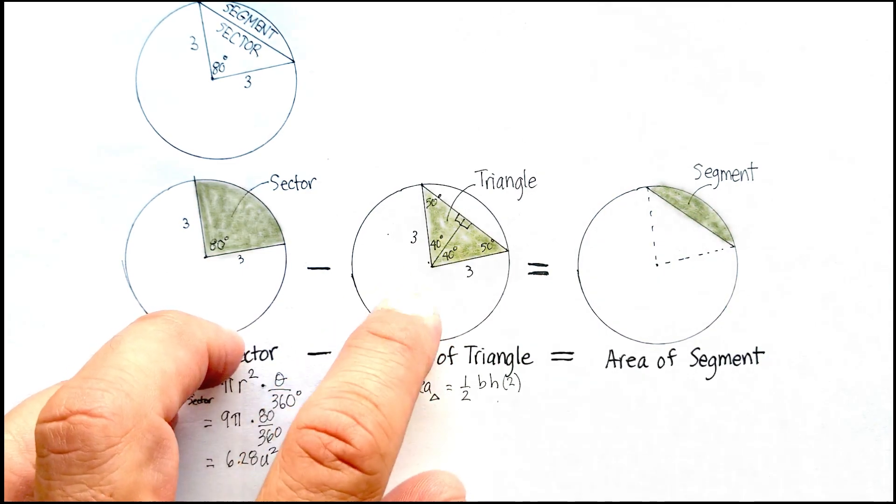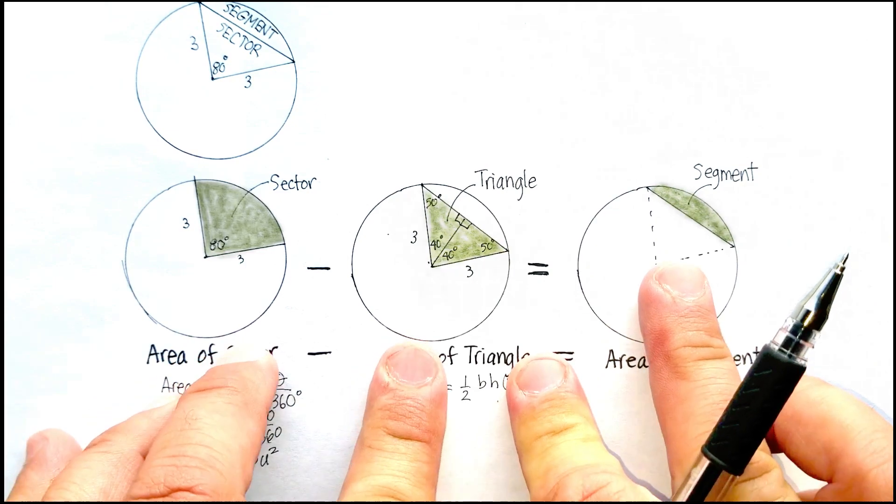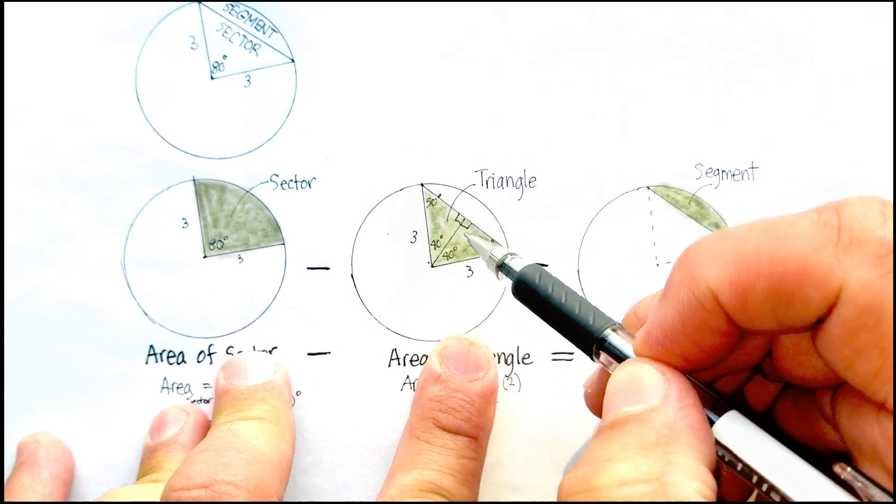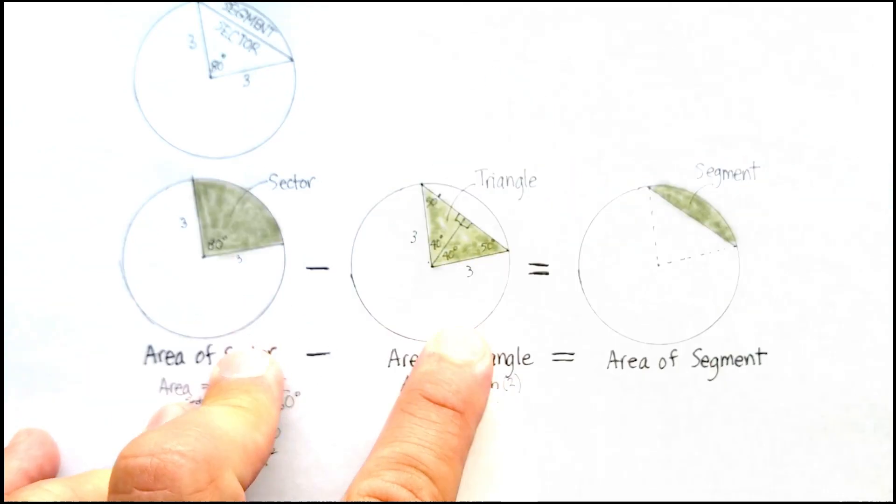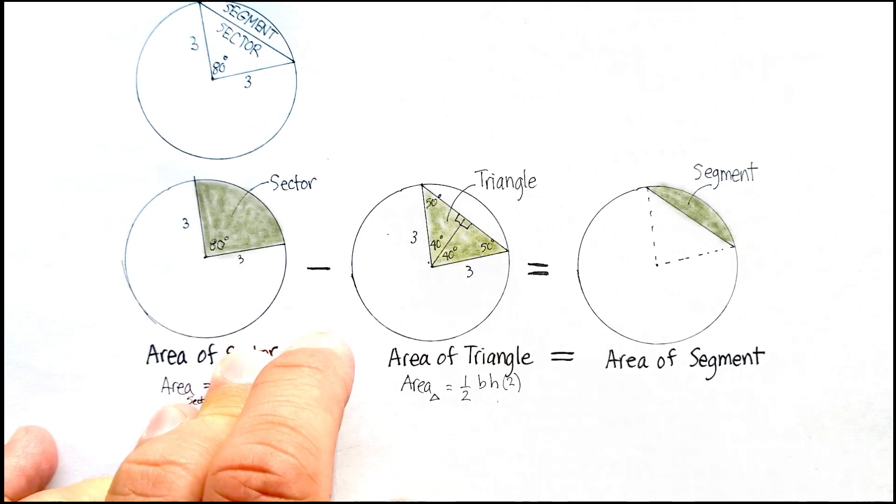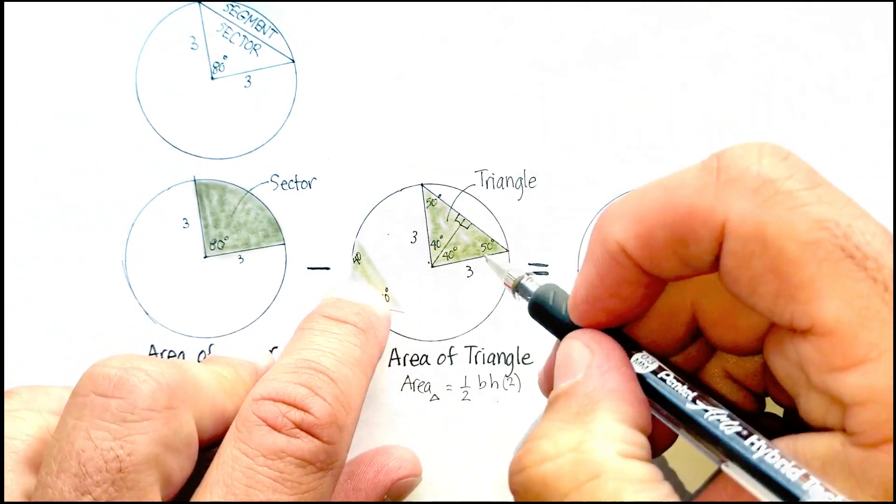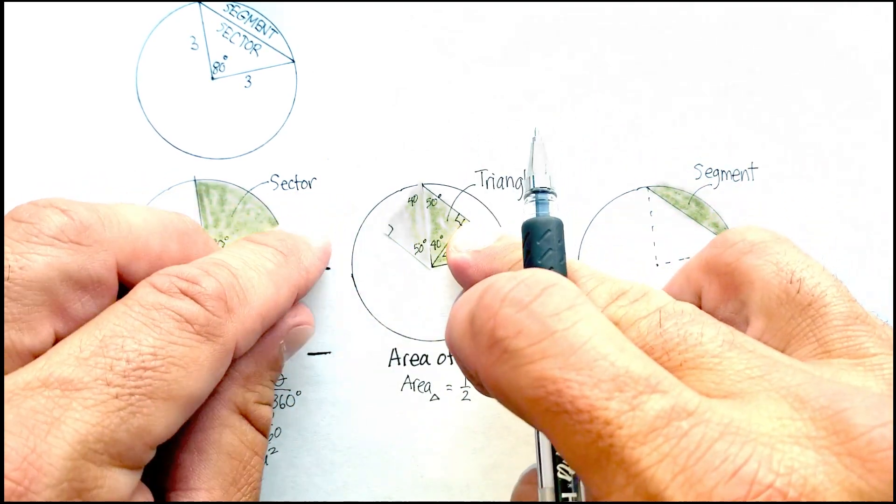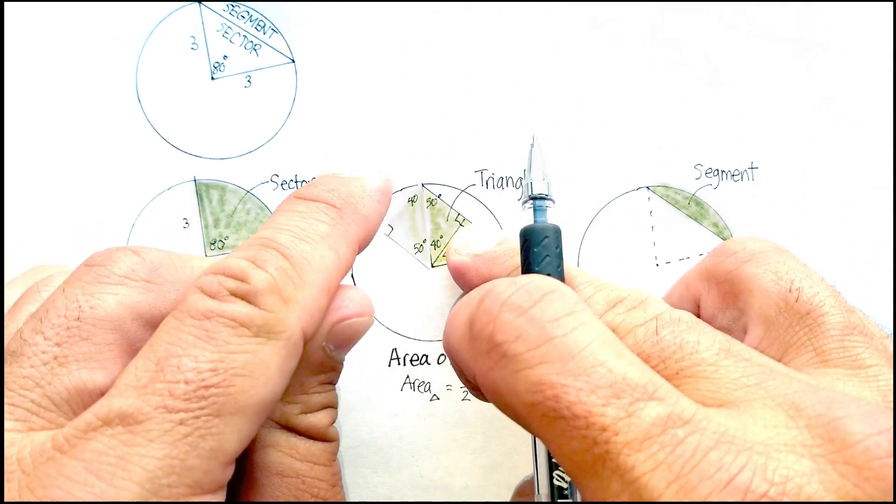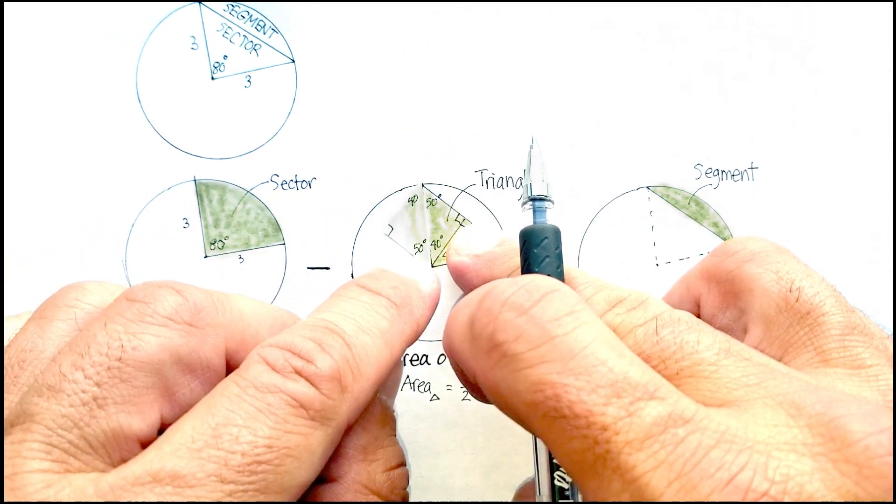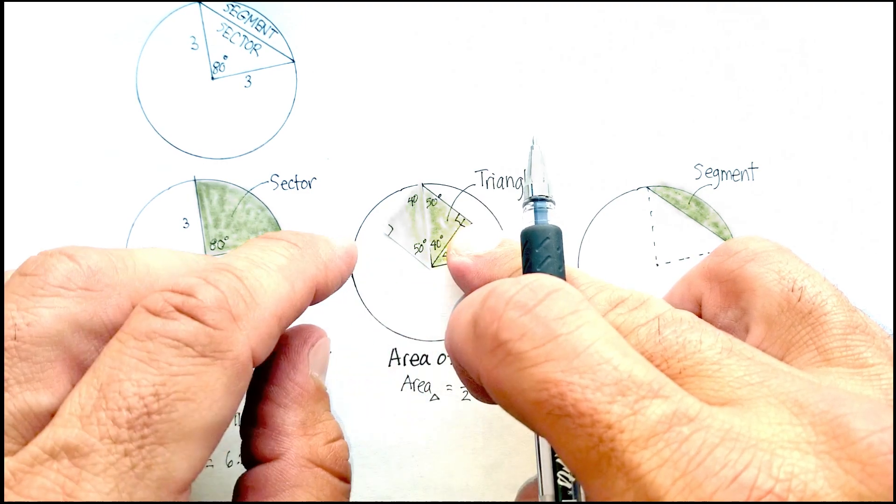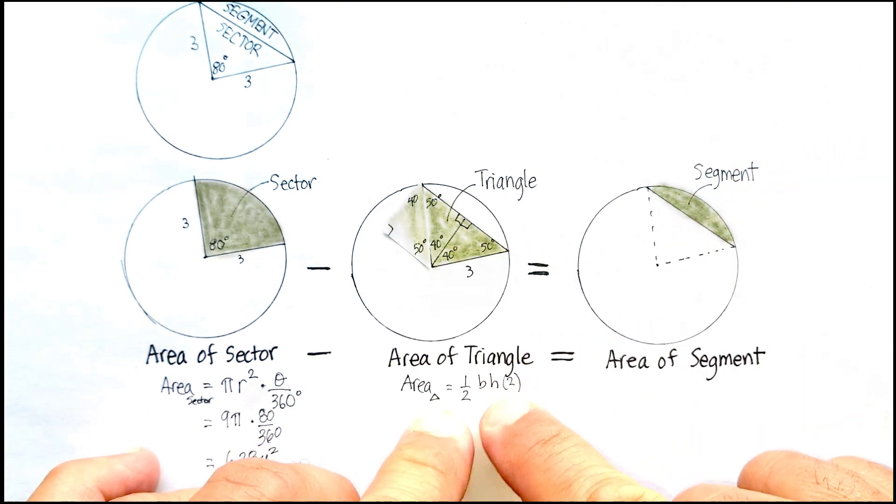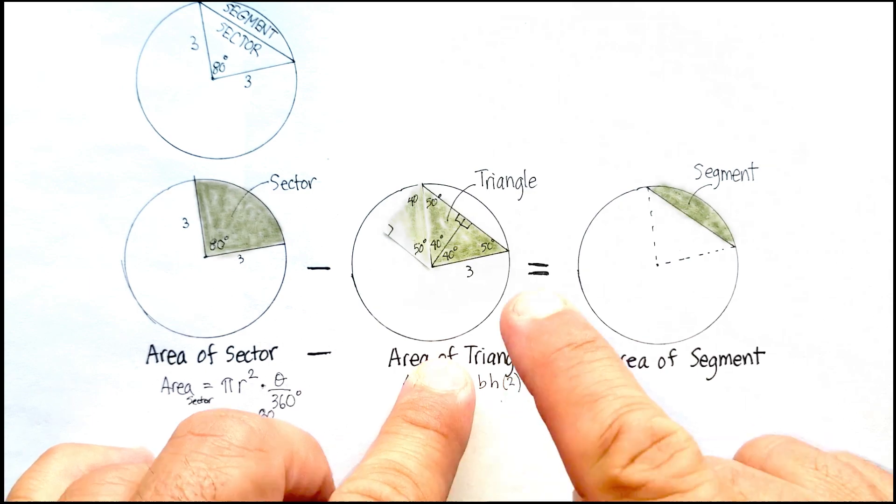Now, what I'm going to do is I'm going to find the area of one of those right triangles, and then just multiply it by 2. Find one of these, multiply it by 2, I'll get the entire triangle. Now, here's something else that's kind of interesting. If I were to take this triangle and then just flip it up to here, look what I've created. I've created a rectangular shape, and remember that the area of a rectangle is just length times width, which turns out to be base times height.